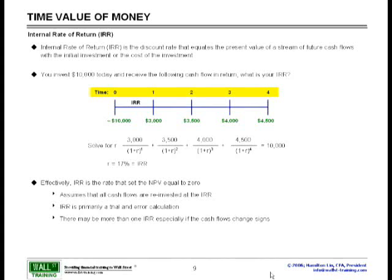So looking at our IRR here, the idea here is that this is the discount rate once again that will equate the present value of a stream of future cash flows to zero.